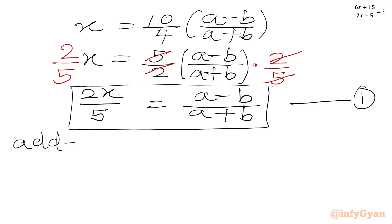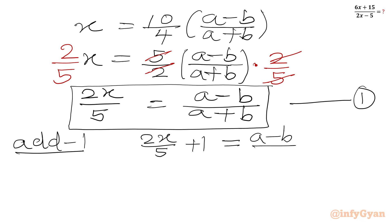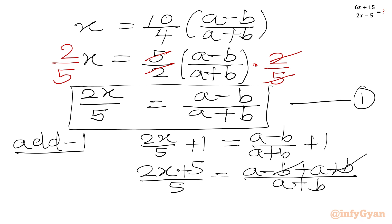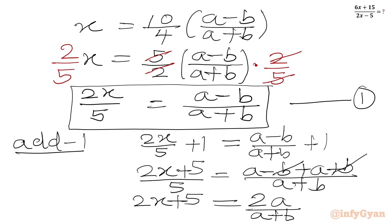Now I will add 1 to both sides. So we will write 2x/5 + 1 = (a - b)/(a + b) + 1, which will be equal to (2x + 5)/5 = (a - b + a + b)/(a + b). Plus b and minus b cancel, so the right-hand side gives us 2a/(a + b). The left-hand side is (2x + 5)/5. We will call this equation 2.